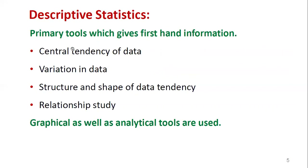Coming to descriptive statistics, here are some primary tools which give first-hand information. The first one is central tendency of data, the second is variation in data, the third is structure and shape of data, and the last one is relationship study. These are the primary tools, and both graphical as well as analytical tools are used to represent them.